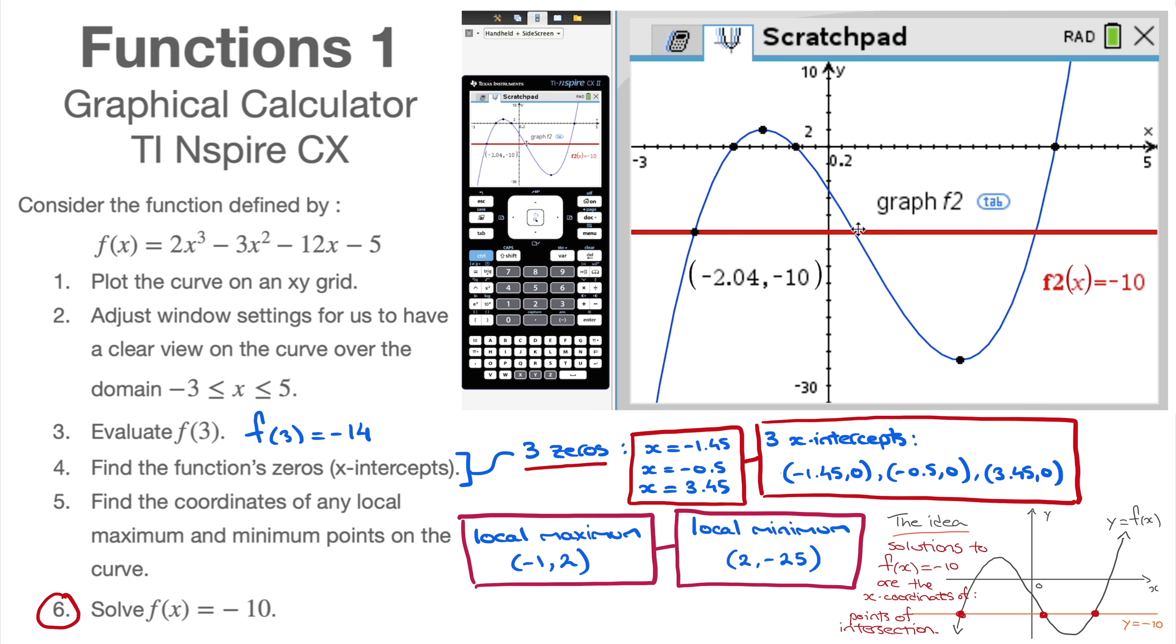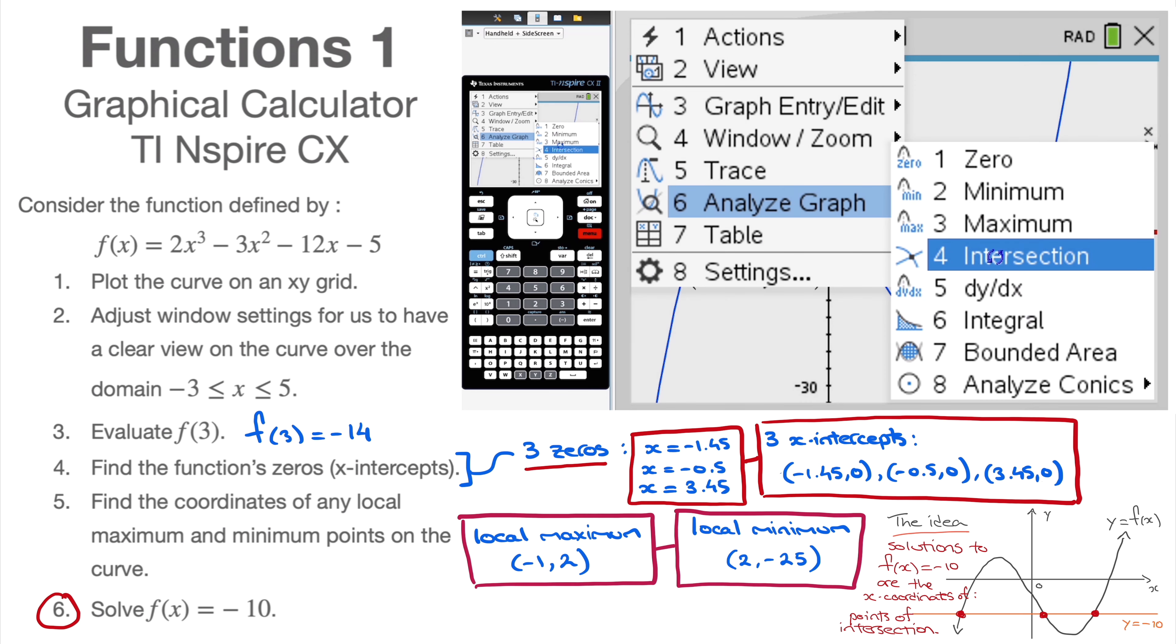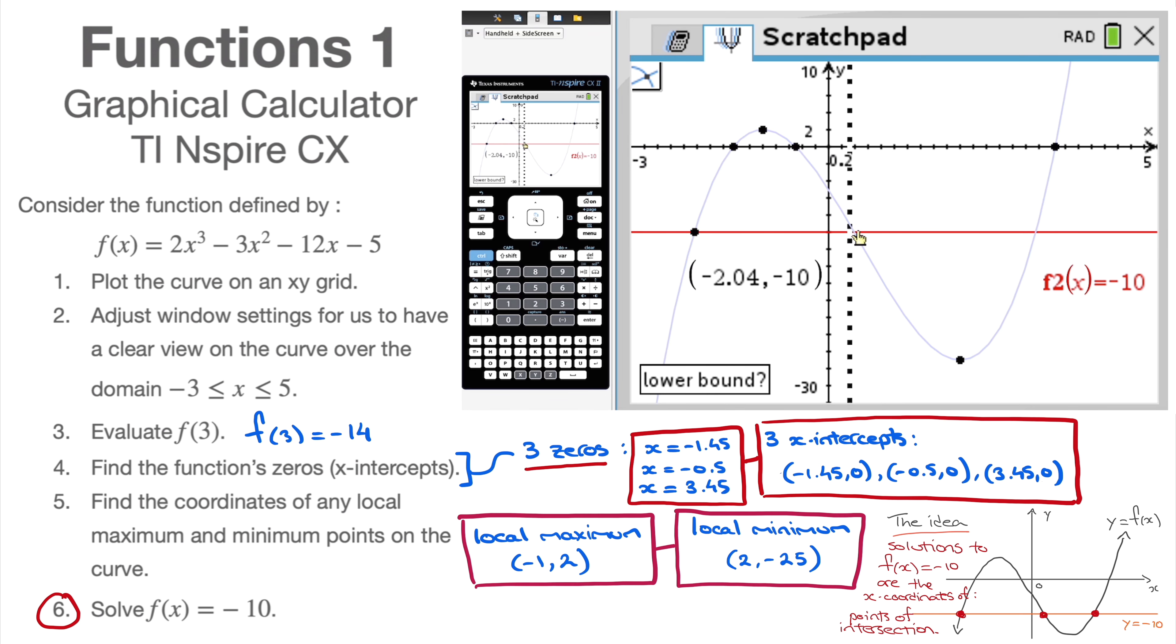The second solution I'll find by finding the x coordinate of the second point. Click on menu, analyze graph again, the intersection. And so I go to the left, I click. I go to the right, I click. That's the second point. And so I write that as well on my iPad screen. I'll have 0.389 is a second solution.